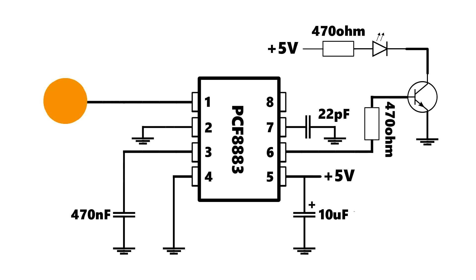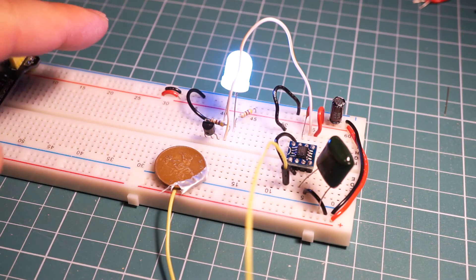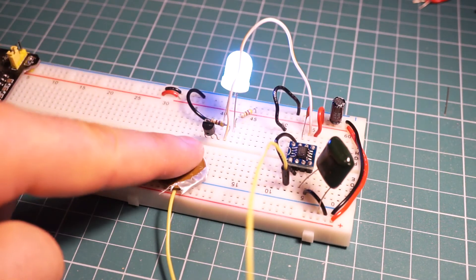Now let's go back to the circuit and change one thing. Let's connect pin 2 to pin 8 instead of ground. We just changed the mode of the chip. Instead of a button, it now acts as a switch. Touching the penny once turns the LED on and touching it again turns the LED off.